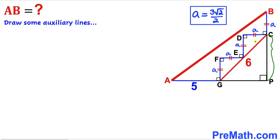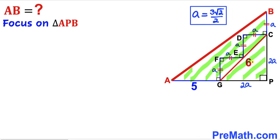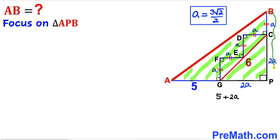We can see that segment CP equals the sum of two individual segments a and a, so CP = 2a. Likewise segment GP = 2a as well. Now focusing on the big right triangle ABP: side AP = 5 + 2a, and side BP = a + 2a = 3a.